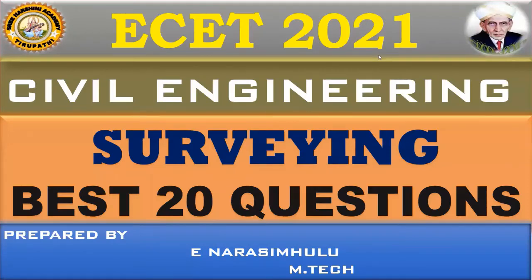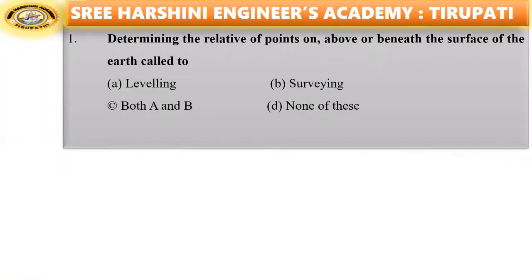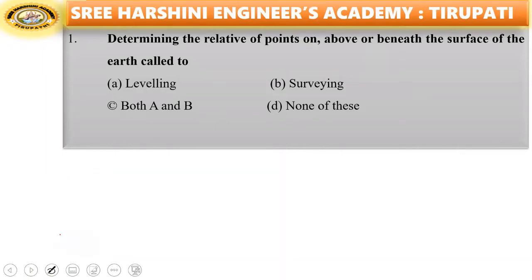Have a look at the first question. Determining the relative positions of points on above or beneath the surface of the earth is equal to — options: leveling, surveying, both A and B. The answer here is leveling.